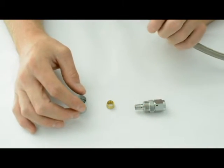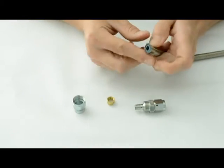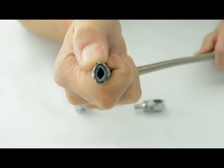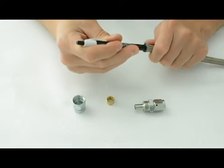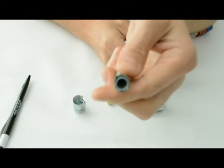So the way this line works is it uses a compression style fitting. When you get your hose in it's going to look like this where it's squished down a little bit from cutting. So what you'll do is just take a simple pin, stick down inside of it and get it back to its round shape.